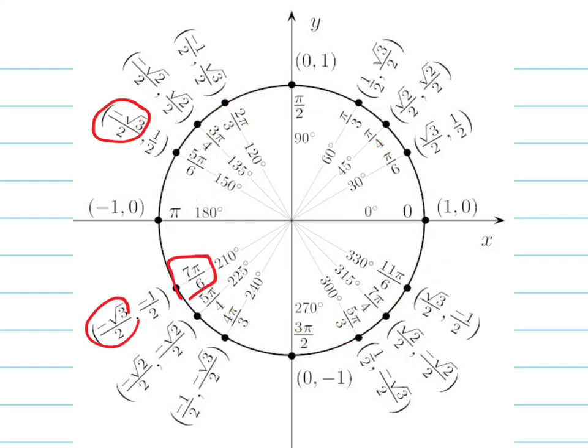And so when I look at this, I'm going to change to green for this. If I add 2 pi to this number, to 5 pi over 6, that's like adding 12 pi over 6, right? I'm going to get 19 pi over 6.